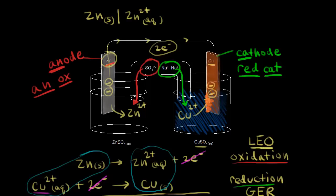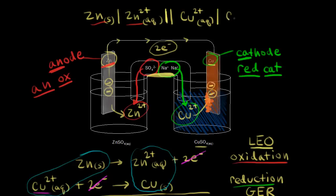Next, draw a double vertical line representing the salt bridge, then write Cu²⁺ for the copper two plus ions. Then draw another single vertical line for the phase boundary, followed by solid copper — the cathode — on the far right. The anode is always on the far left and the cathode on the far right; 'A comes before C in the alphabet' is a helpful way to remember this.